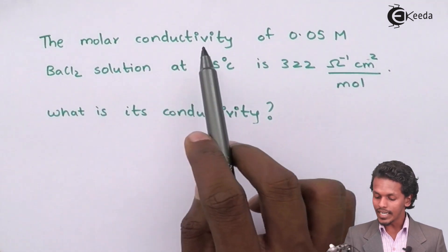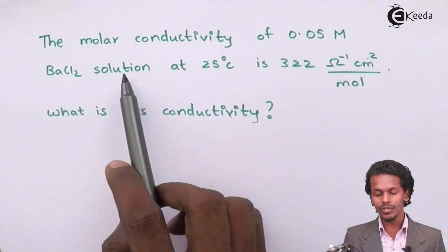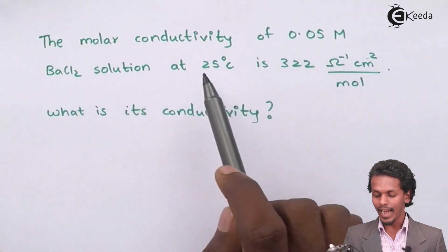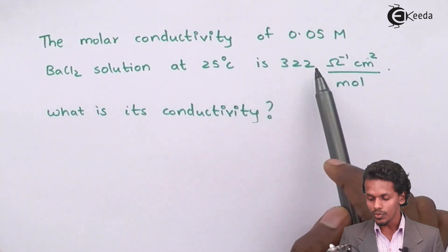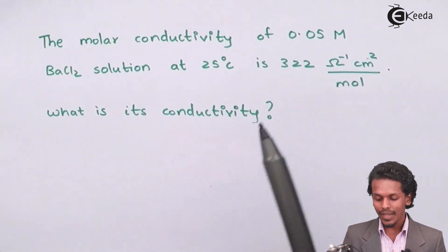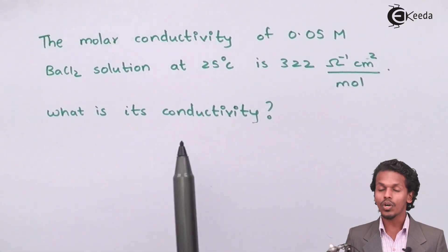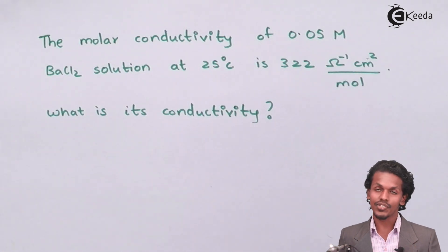The molar conductivity of a 0.05 molar BaCl2 solution at 25 degrees Celsius is 322 ohm inverse centimeter square per mole. Based on this, we have to calculate the conductivity of this solution.